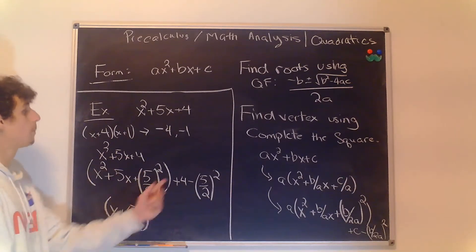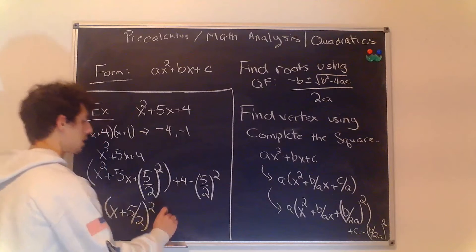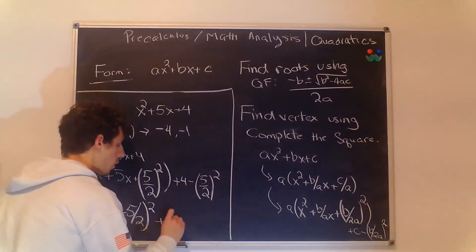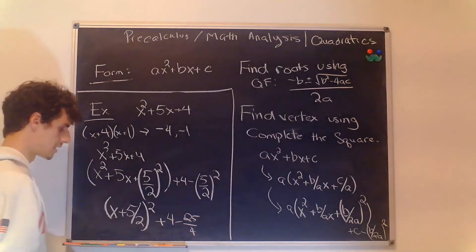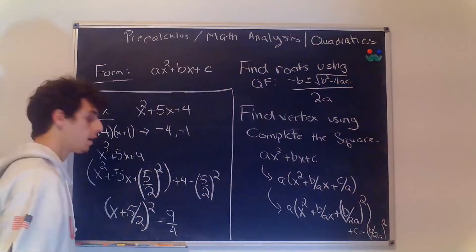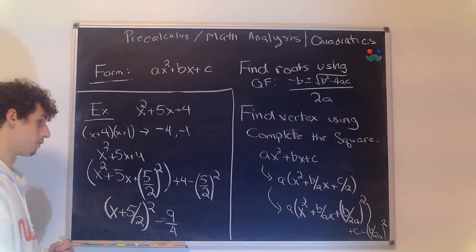That gives us this polynomial then we have this stuff still outside so that's going to be +4 - 25/4 which we can simplify down. I'll go ahead and do that here. That simplifies down to -9/4.